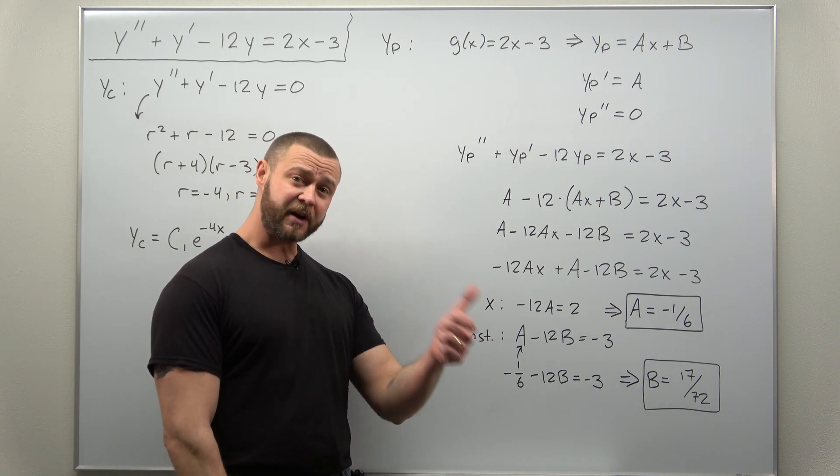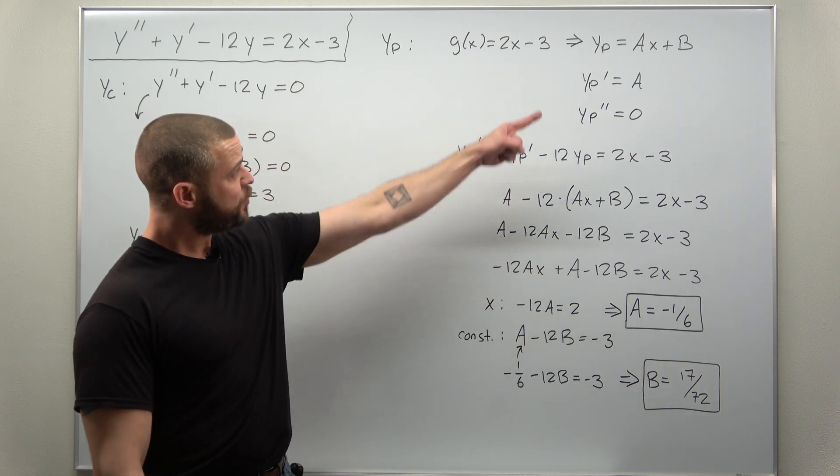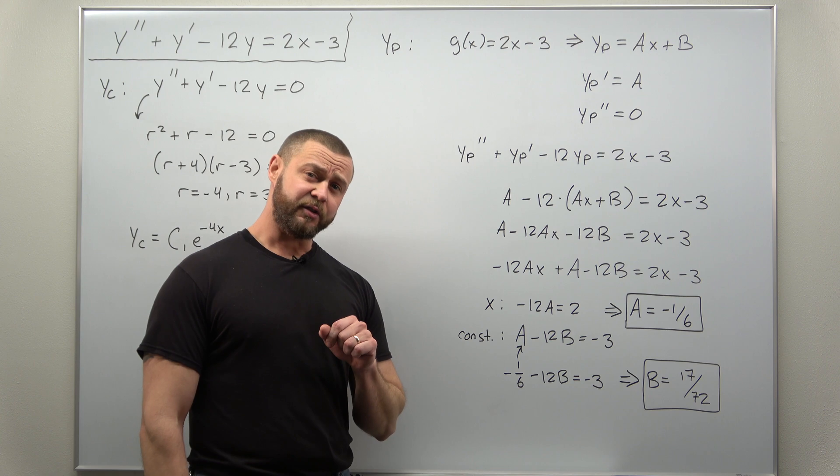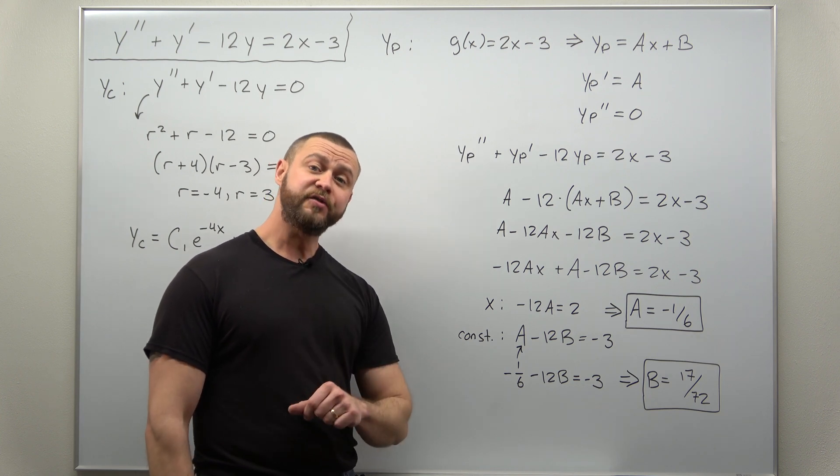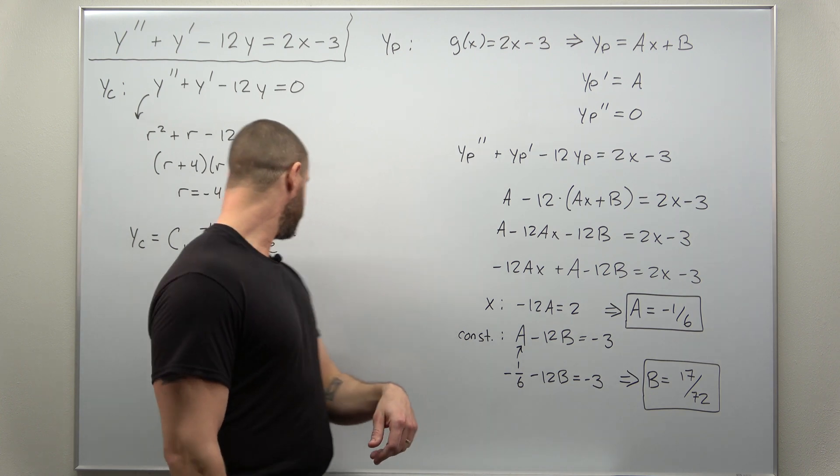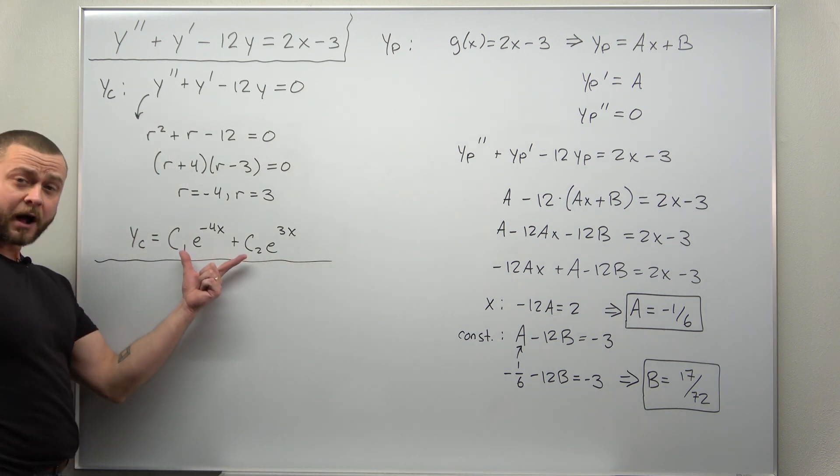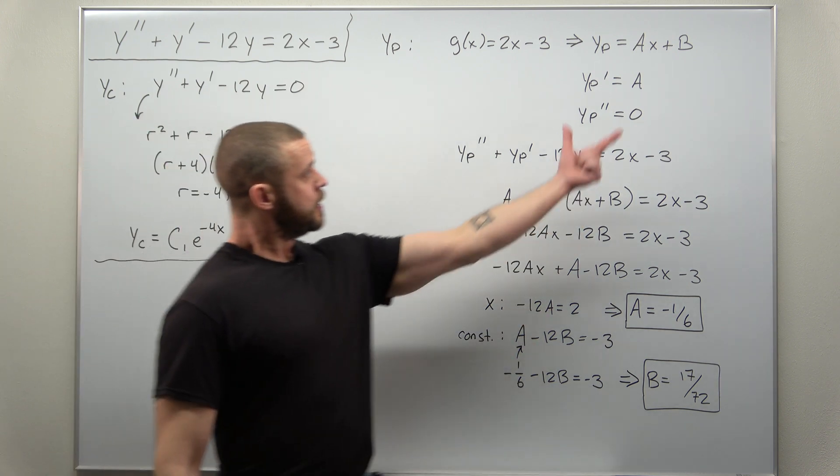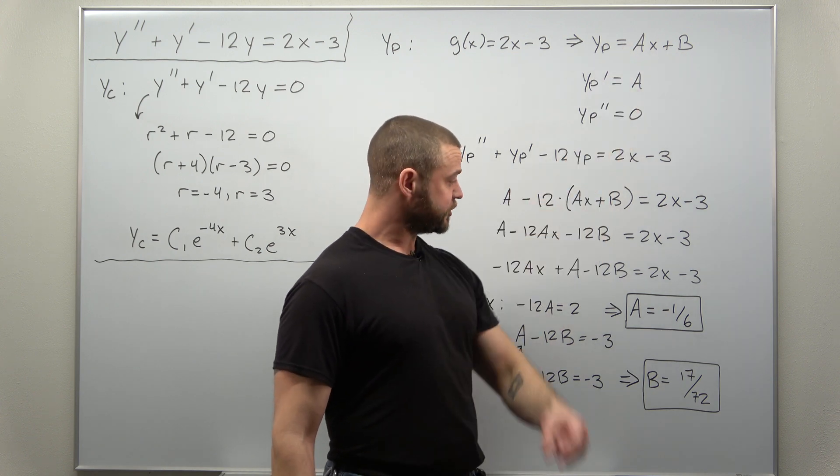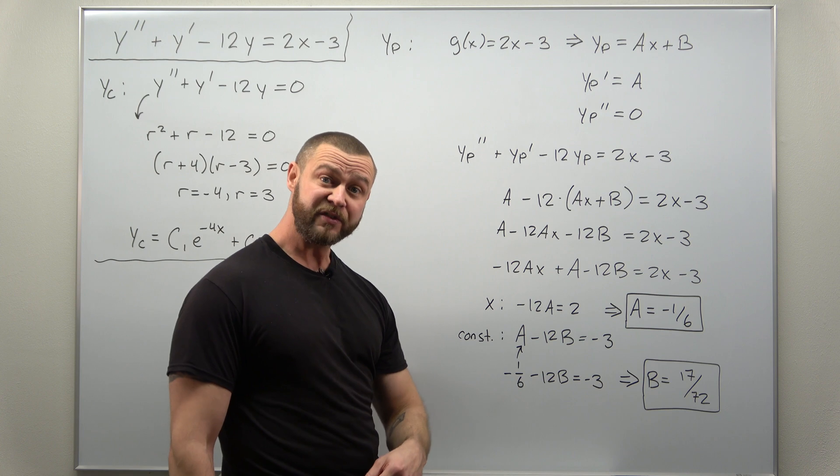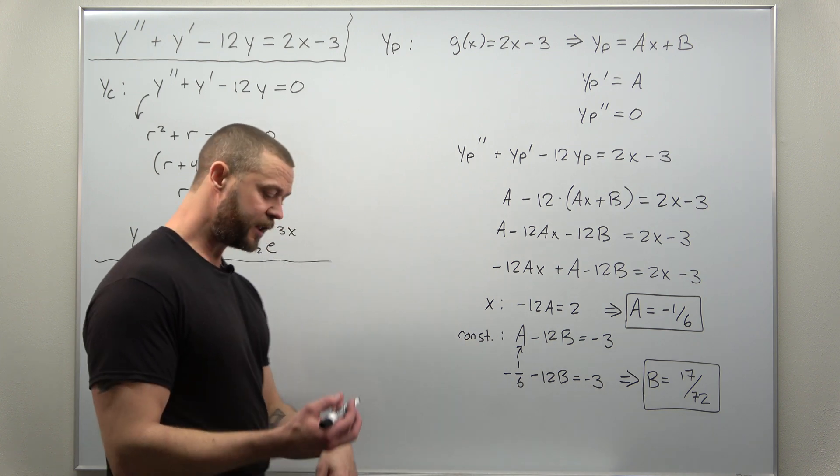Those are the two values for a and b, which we can plug back in to get our particular solution. Now, I always like to, at the end of a problem, write down the full solution. We have our complementary solution and our particular solution determined with the values of a and b. Now we just need to plug them in and write it all out.